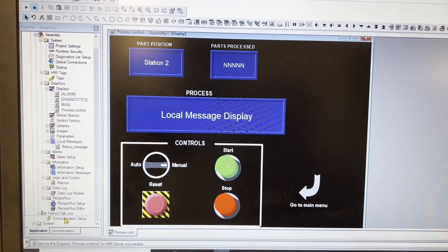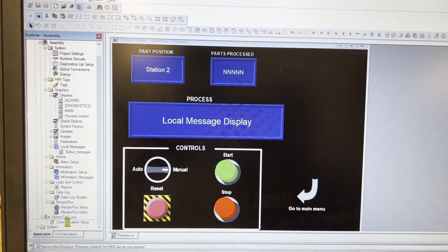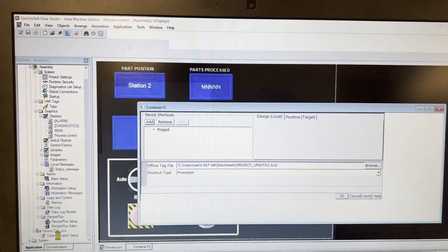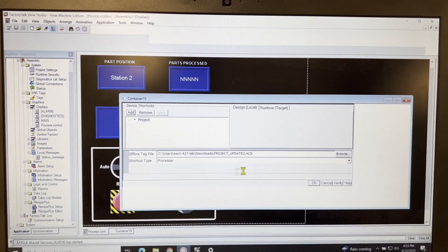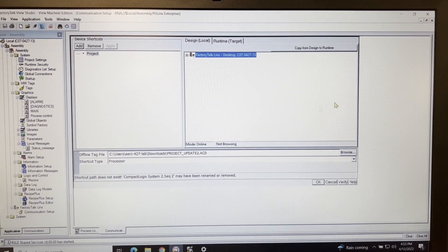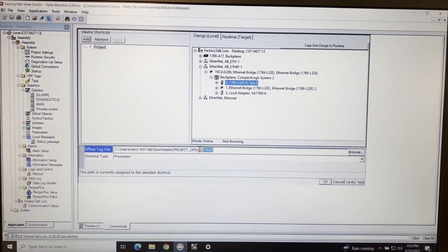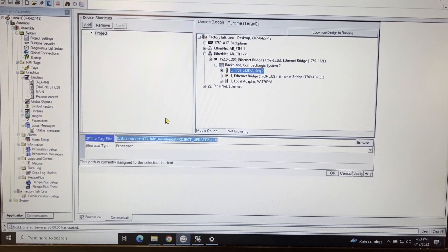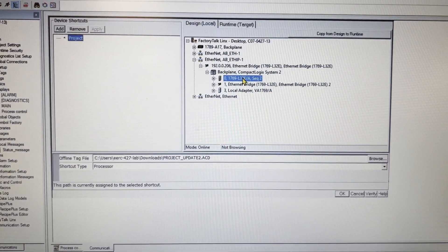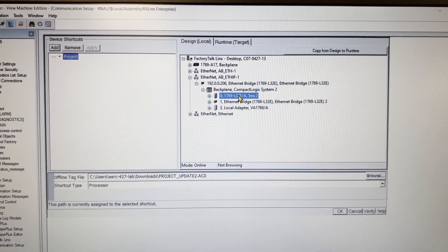Communication has to be set up in order to assign the RSLogix tags. Here the file is loaded into the communication setup. Then click on Add Device Shortcut. And then highlight the controller of the PLC.